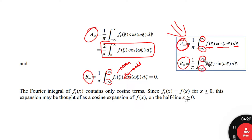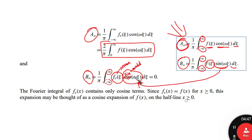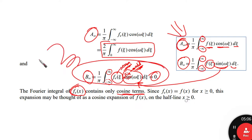For b(ω): it equals (1/π) ∫₋∞^∞ f_e(z) sin(ωz) dz. Since f_e is even and sine is odd, even times odd gives zero. So b(ω) = 0, and the Fourier integral of the even function contains only cosine terms — we end up with only the a(ω) cosine coefficient.